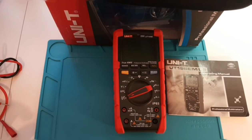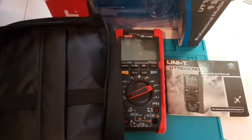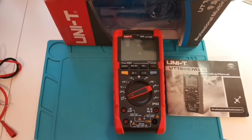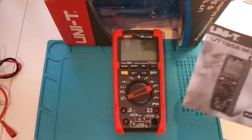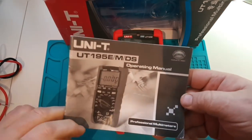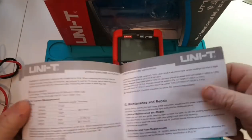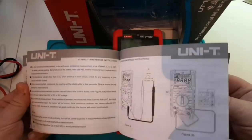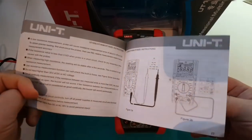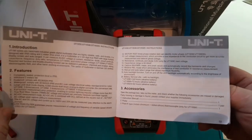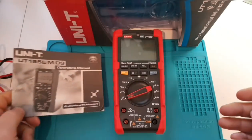Also in the box, you get a really nice case with plenty of room for the probes, the meter, and anything else you want to throw in there. You get your UT195E operating manual. It's verbose enough and I like the layout. It's more of a brochure than a manual, but it's quite well explained. There's also a digital version available for download from the Unity website.